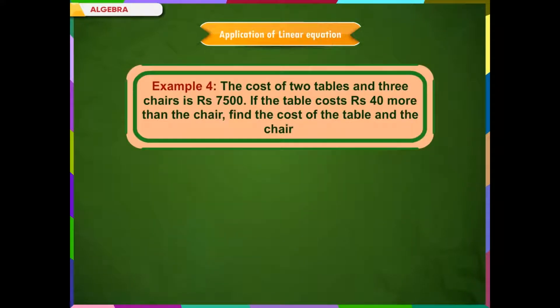Example 4: The cost of 2 tables and 3 chairs is Rs. 7,500. If the table costs Rs. 40 more than the chair, find the cost of the table and the chair.